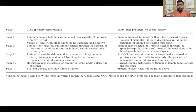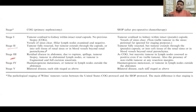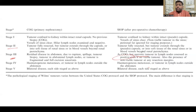Stage two involves slight extracapsular extension. Stage three includes spillage, lymph node involvement, and IVC thrombus — most of these fall under stage three. A key SIOP difference: since chemotherapy is given first, necrotic nodes found in the abdomen are still considered positive. Even necrotic tumor margins are considered positive even without viable tumor. These are the two things emphasized differently between COG and SIOP staging; otherwise, most staging criteria are the same.